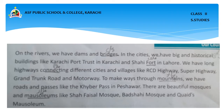We have long highways — RCD Highway, Super Highway, Grand Trunk Road, and Motorway. To make roads through mountains, we have passes like Khyber Pass in Peshawar. There are beautiful mosques like Faisal Mosque, Badshahi Mosque, and Qais Mosque.